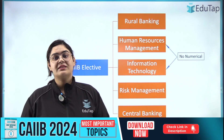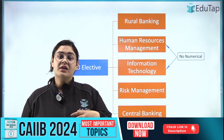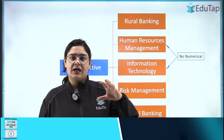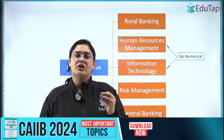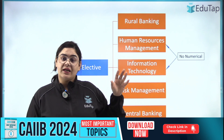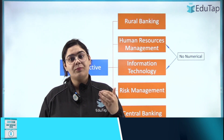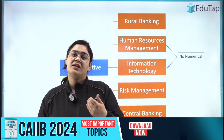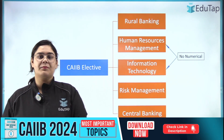Because in the CAP exam, there are many numericals and there will be no options for them. In theory questions you can choose one question, but in numericals there is no option — you have to solve it and fill in the answer. So numericals make the exam more difficult.